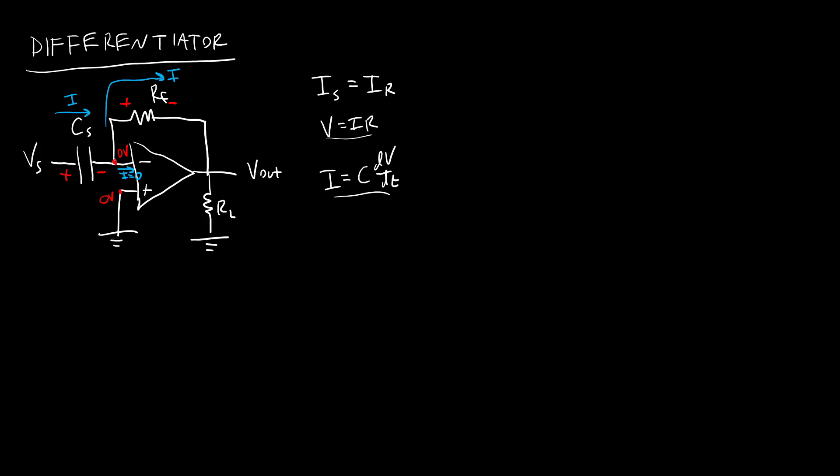So for the resistor, based on the sign convention I defined, I have I equals the voltage drop over this resistor from positive to negative, which is going to be 0 volts minus Vout, all over the feedback resistor value RF. And then for the capacitor, I'm going to have I equals Cs dV dt. V, the voltage drop over this capacitor, is Vs minus 0. So that's just dVs dt.